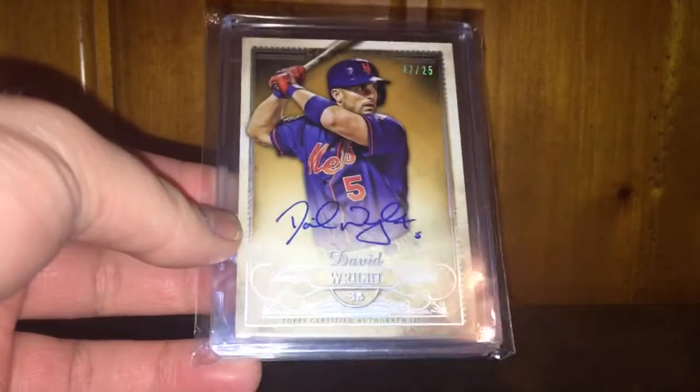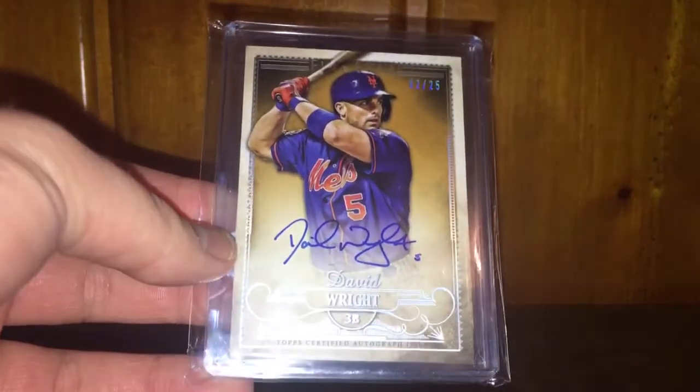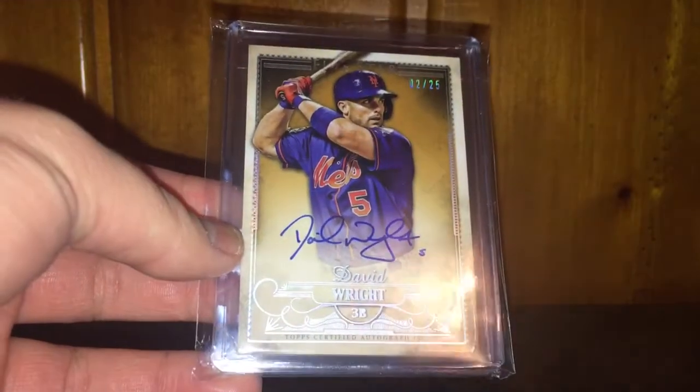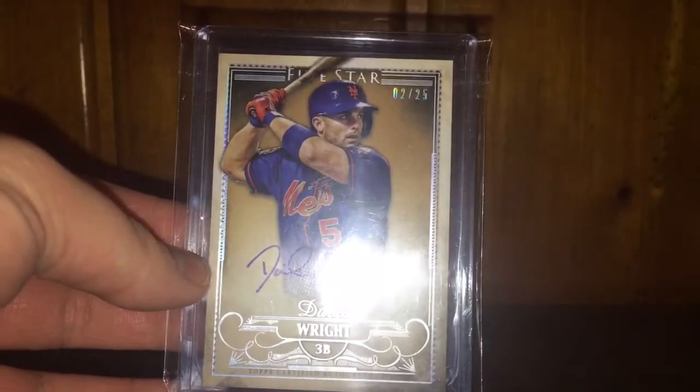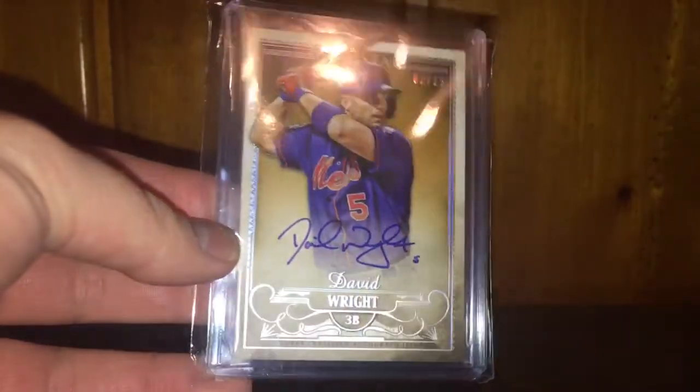This one's from Dave, Josh Johnson 55 in a Christmas package. Love the look of this card. It's got the rainbow foliage, David Wright out of Topps Five Star, number 28 or two out of 25. Nice looking card there, one of my favorites too.